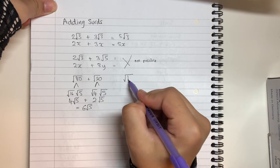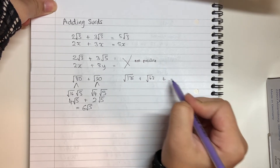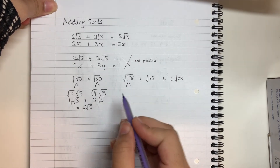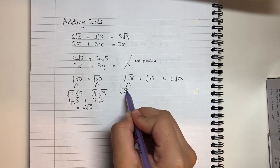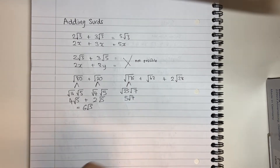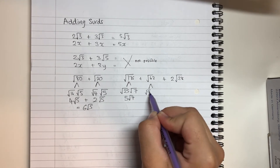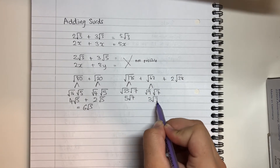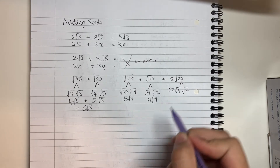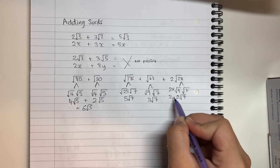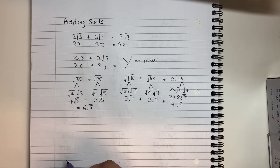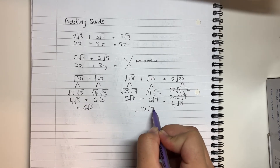Another example: root 175 plus root 63 plus 2 root 28. I need to simplify each one. The biggest square number that goes into 175 is 25, and 175 divided by 25 is 7, which simplifies to 5 root 7. The biggest square number that goes into 63 is 9, and 63 divided by 9 is 7, which simplifies to 3 root 7. The biggest square number into 28 is 4, and 28 divided by 4 is 7; multiplied by 2 gives 4 root 7. So 5 root 7 plus 3 root 7 plus 4 root 7 equals 12 root 7.